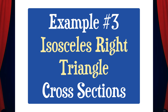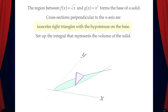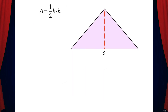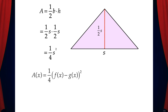Let's do one more example. This one involves isosceles right triangle cross-sections. We'll use the same base as last time, but this time cross-sections perpendicular to the x-axis are isosceles right triangles with the hypotenuse on the base. What we need to do is find an equation for the area of this triangle in terms of its side, which in this case is the hypotenuse. We know that the area of a triangle is one half base times the height, and the base is s. After doing a little bit of geometry, we can see that the height of this triangle is one half s. So the area of this triangle is one half s times one half s, which is one fourth s squared. Now we can write the A of x equation, which is one fourth times the quantity of f of x minus g of x squared.